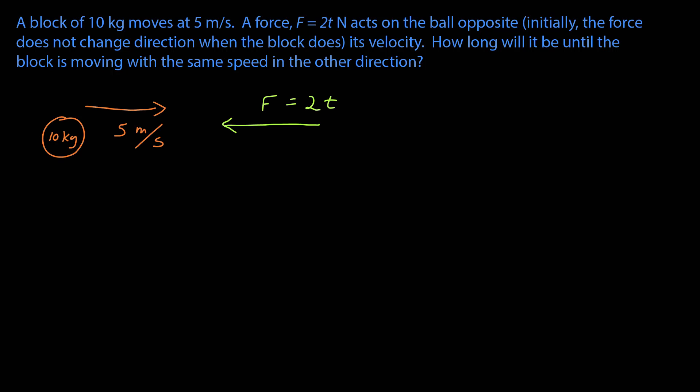We still want to start with a picture. So here's my block that looks a whole lot like my ball from the previous problem, but it's going to the right at 5 meters per second, being opposed by force. That's time varying. Coordinate system is absolutely crucial. I'm going to have my positive x to the right. I'm going to calculate my momentum first. Here's my initial momentum, and that's equal to 50 newton seconds, since the velocity is in the positive direction.